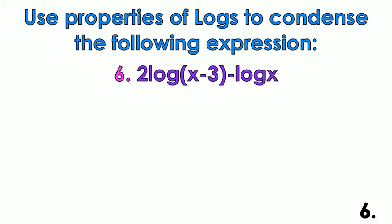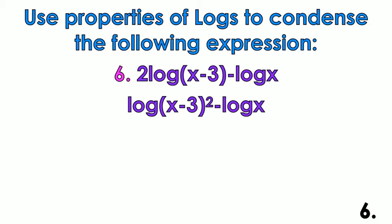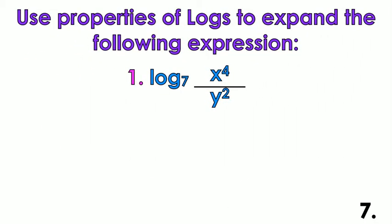Example six: use the properties of logs to condense 2 log x minus 3. What base is that? There are no numbers — no log base written — so when there's no base written, the base is 10. That's a common log. First, apply the power rule so the coefficient 2 becomes an exponent. Then use the quotient rule because there's subtraction, and it's really that easy.